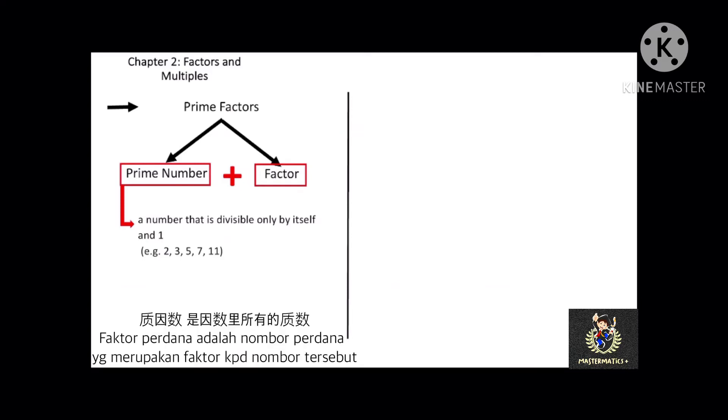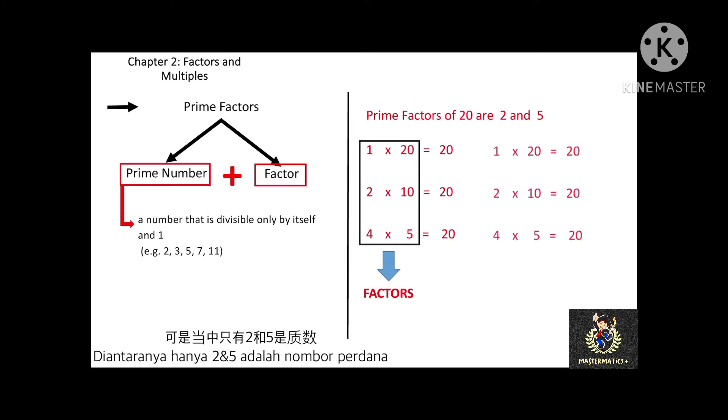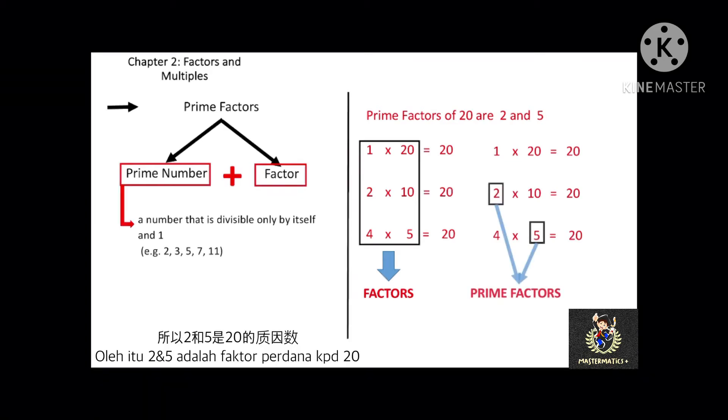Prime factors are the factors which are also a prime number. For example, the factors of 20 are 1, 2, 4, 5, 10, and 20. But are all these factors also a prime number? Not. Only 2 and 5 are prime numbers. Therefore, 2 and 5 are prime factors of 20.